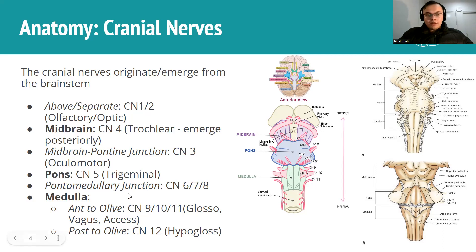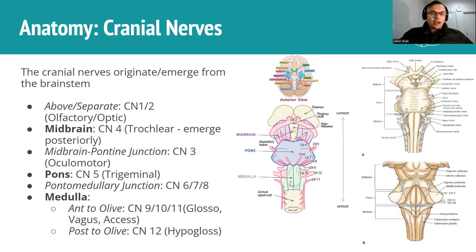At the medulla we have the rest of them. Anterior to the olives is cranial nerve 12, the hypoglossal, and posterior to the olive is cranial nerves 9, 10, and 11. So that's how all the cranial nerves emerge. You're probably wondering how to memorize all of that - we'll actually come to the rule of four later, which is a very nice way of remembering everything. But understanding how they originate and emerge is important for your anatomy.